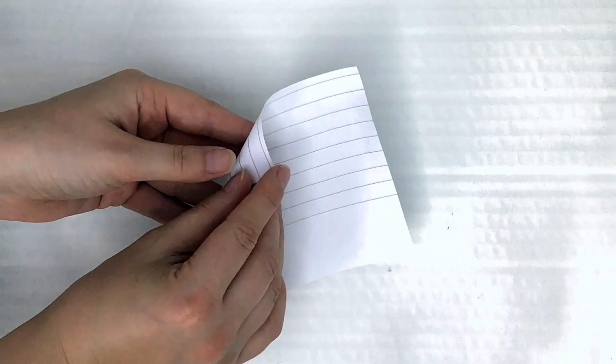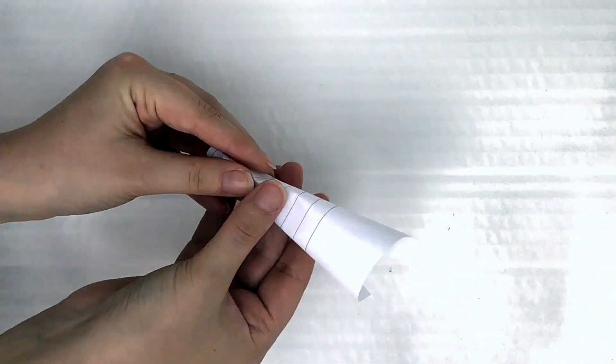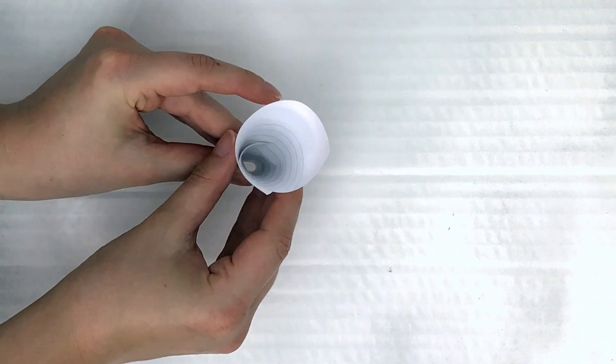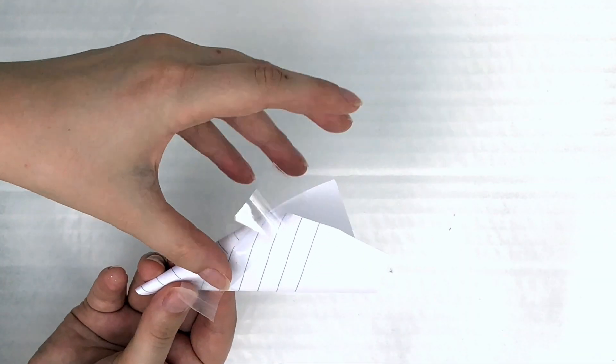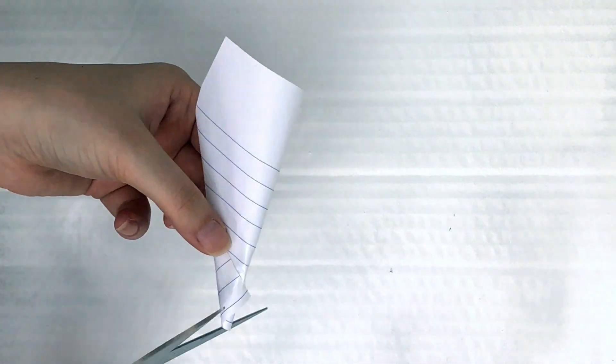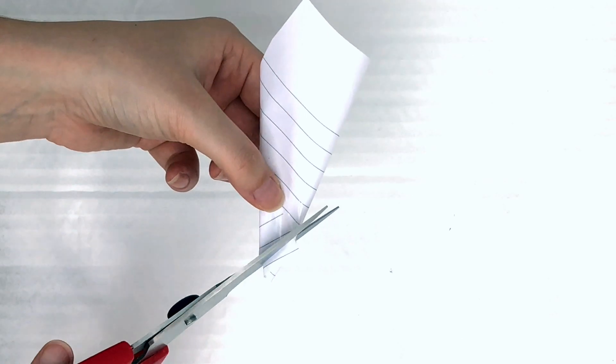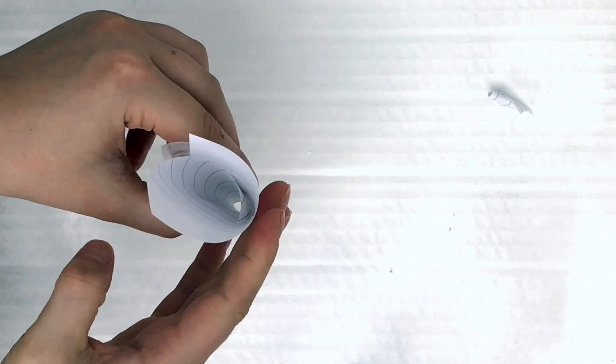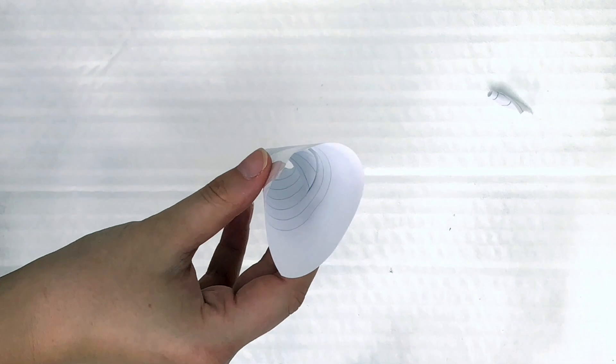Step one, if you don't already have a funnel, you can make one by rolling your paper into a cone shape like this. Stick it down with some sellotape and then snip off the bottom with some scissors. Make sure you get a grown-up to help with this part. Now you've got a funnel that we can use in step three.